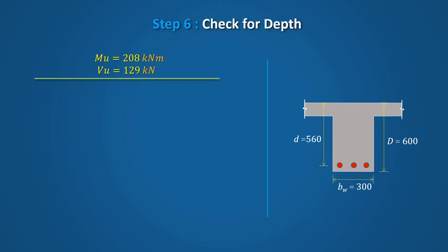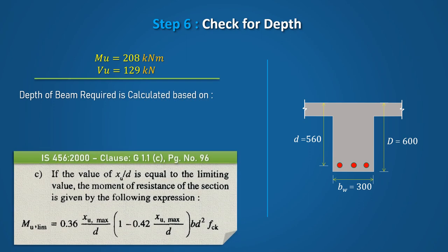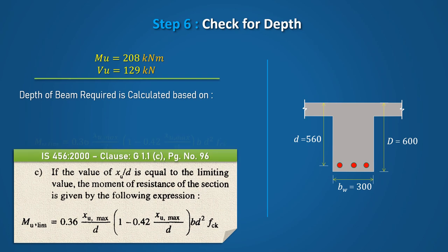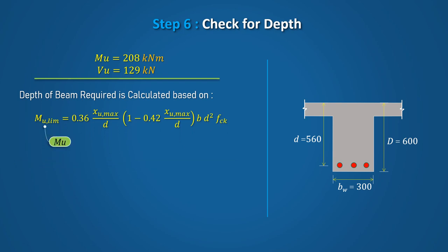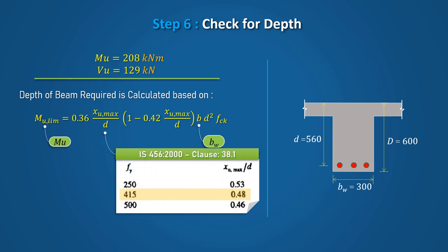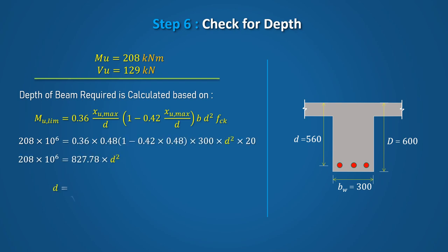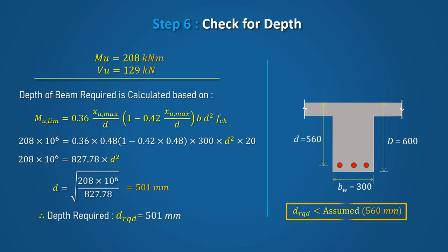In Step 6, check the adequacy of the assumed depth of the beam using the equation given in clause G1.1c of IS456-2000. Substituting MU for MU-limiting and web width BW for B, and using the value of XU-max/D for FY equal to 415 from clause 38.1, the required effective depth is 501mm, which is less than the assumed effective depth of 560mm. Hence, the assumed depth is adequate.